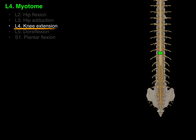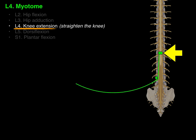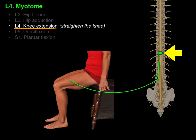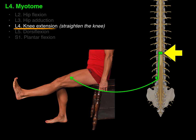L4 is knee extension, which is straightening the knee. There's the L4 spinal cord level and L4 vertebra, and the descending axons become the cauda equina and go out to the quads, causing knee extension — straightening of the knee.